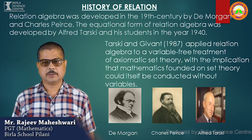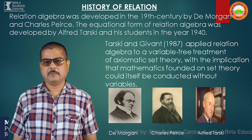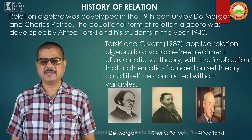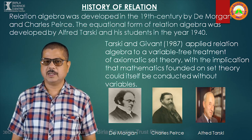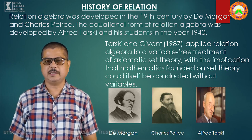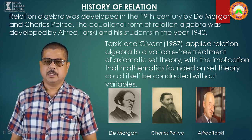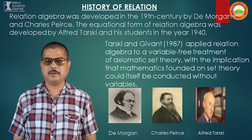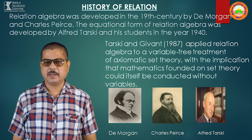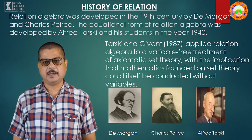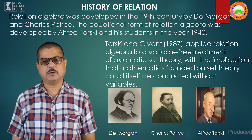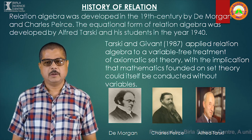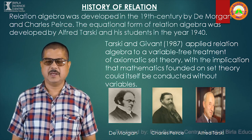Relation is the first topic of class 12th. When we go into the history of relation algebra, we come to know that D. Morgan and Charles Spears are known as the fathers of relation because relation algebra was developed in the 19th century by them. The equational form of relation algebra was developed by Alfred Tarski and his students in the year 1940. Tarski and Gibant in the year 1987 applied relation algebra to a variable-free treatment of axiomatic set theory, with the implication that mathematics founded on set theory could itself be conducted without variables.